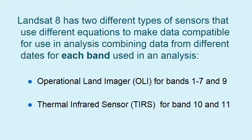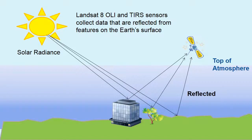The two types of sensors on the Landsat 8 mission are the Operational Land Imager, or OLI, covering bands 1 through 7 and 9, and the Thermal Infrared Sensor for bands 10 and 11. Keep in mind there are two different instruments and they have to be corrected using different equations. We're looking at solar irradiance — the energy from the sun as it is reflected from objects and captured by the sensors at the top of the atmosphere, for solar reflectance.